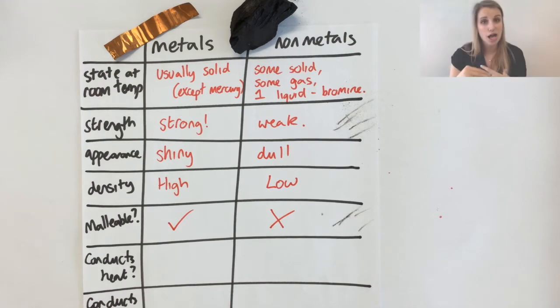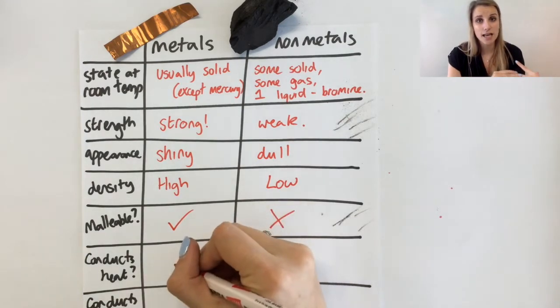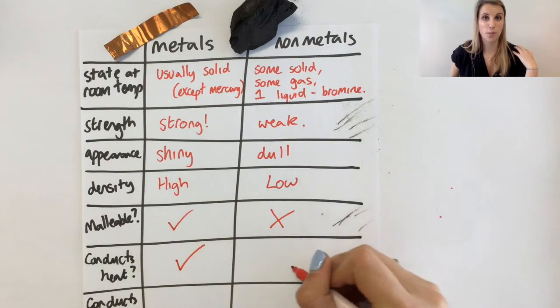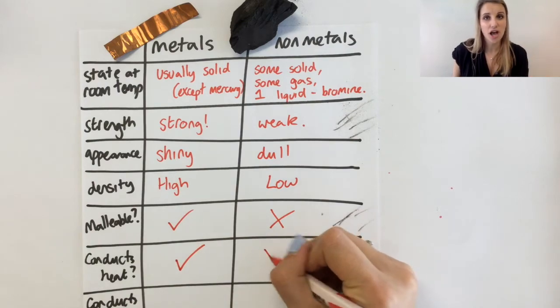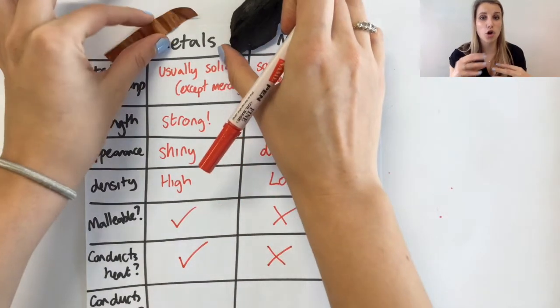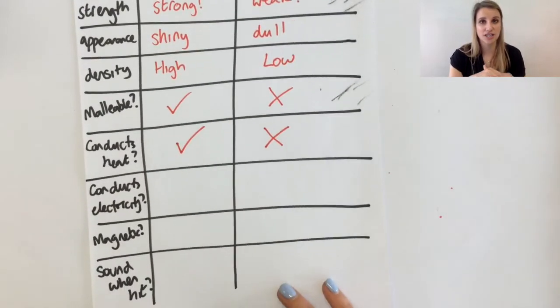Conducting of heat. Metals are very good at conducting heat and conducting heat away from your bum if you sit on a metal bench. Whereas non-metals are not very good at conducting heat at all.